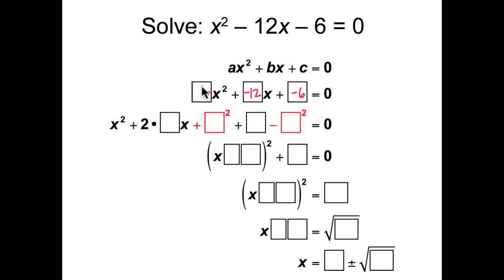Because a is equal to 1, we'll just be working with the values for b and c. So starting with the value for b, the negative 12, we rewrite it as 2 times another number. Negative 12 can be rewritten as 2 times negative 6.